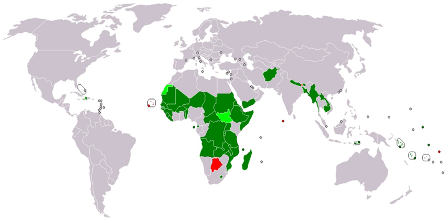The UN acknowledges that it has 'no established convention for the designation of developed and developing countries or areas,' according to its M49 standards published in 1999. The designations 'developed' and 'developing' are intended for statistical convenience and do not necessarily express a judgment about the stage reached by a particular country or area in the development process. The UN implies that developing countries are those not on a tightly defined list of developed countries.